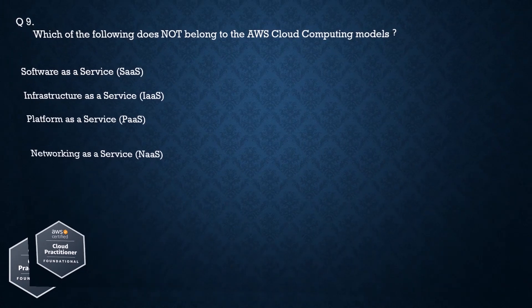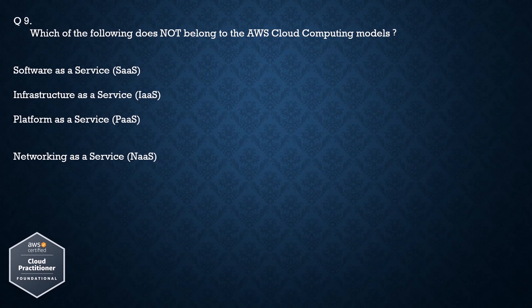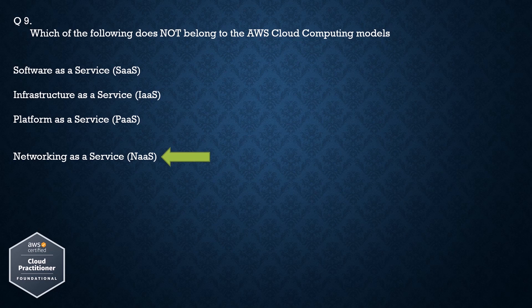Question number 9: Which of the following does not belong to the AWS Cloud Computing Models? Options: Software as a Service (SaaS), Infrastructure as a Service (IaaS), Platform as a Service (PaaS), Networking as a Service (NaaS). The correct answer is Network as a Service.